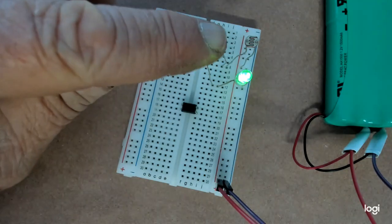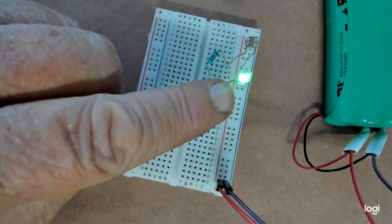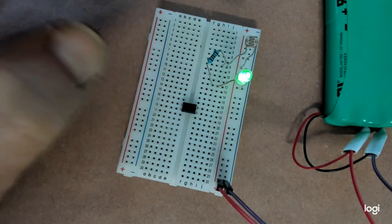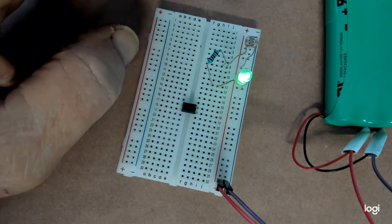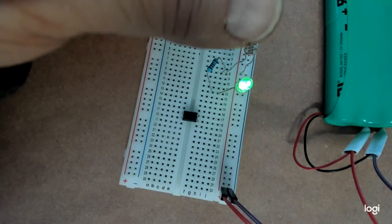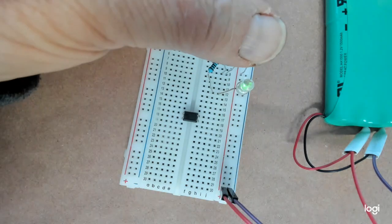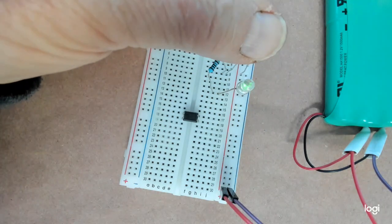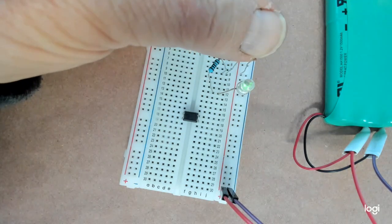Now, the photo cell is working and lighting the light because it's receiving an ambient light. If you put my finger over this, all right, it shuts the LED off because it no longer is acting like a switch.